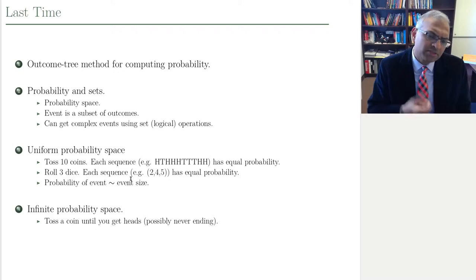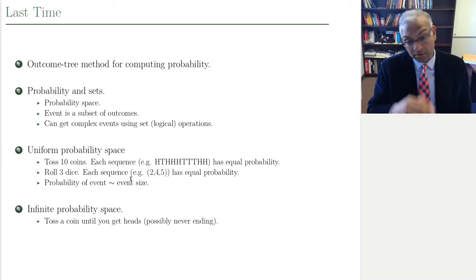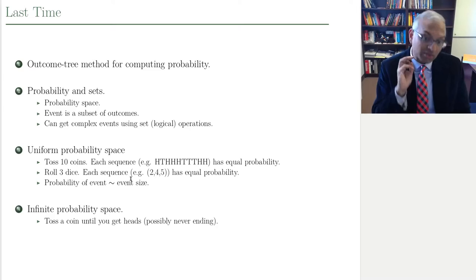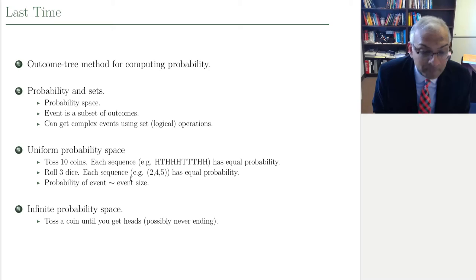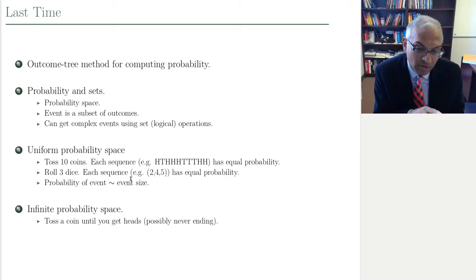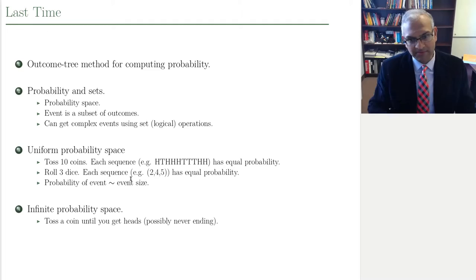We ended last lecture with an interesting twist: what happens if you're doing an experiment that could possibly go on forever? For example, what if you're tossing a coin until you get a hit? We do this very often in practice — for example, we try to send a packet and keep trying until it reaches the destination, or we try to access a Wi-Fi router and keep trying until we succeed. This concept of trying something until you succeed is very common in real life.